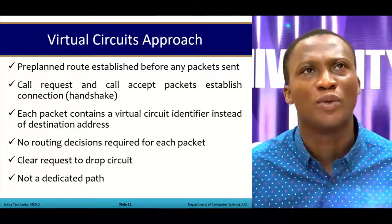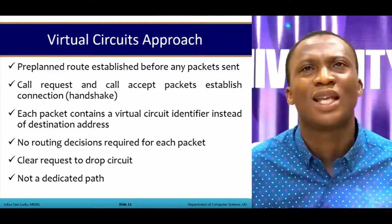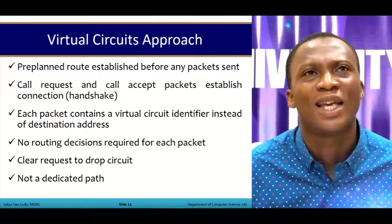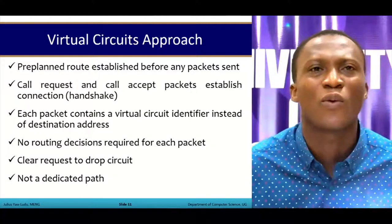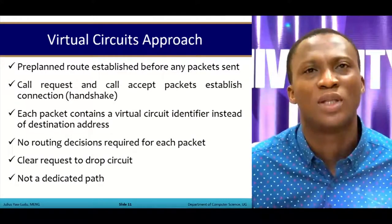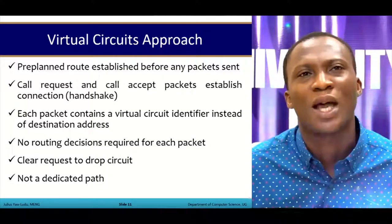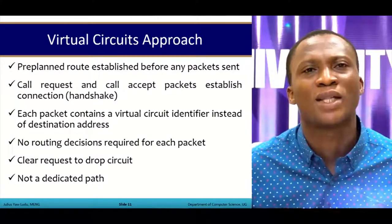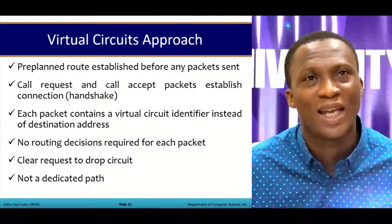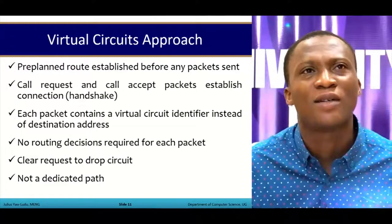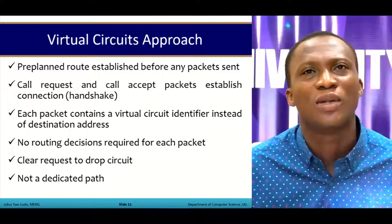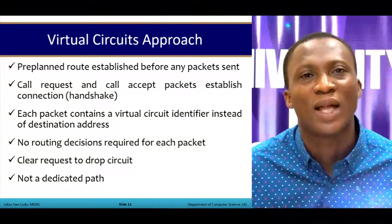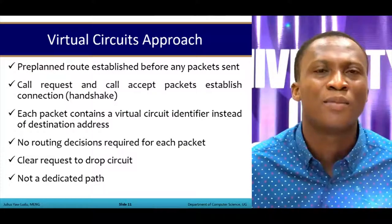In the virtual circuit approach, a pre-planned route is established before any packet is sent. A call request and call accept packet exchange — the handshake — is performed. Station A sends a request to station B; station B responds either accepting or rejecting. Once established, each packet contains a virtual circuit identifier instead of a destination address, so no routing decision is required per packet. A clear request to drop the circuit is also available. Unlike the datagram approach, there is no dedicated path per se, but a pre-planned route.